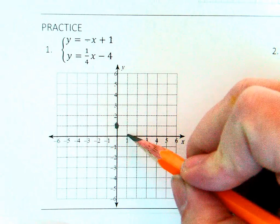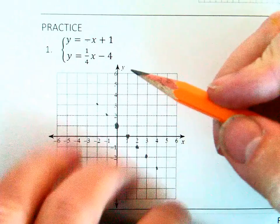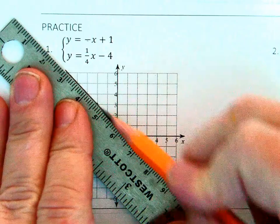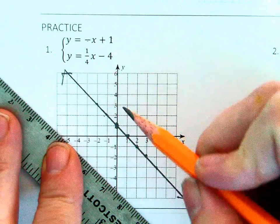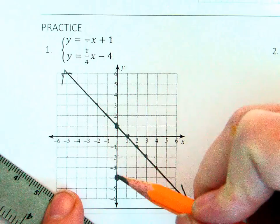In this example, both equations are already in slope-intercept form, so we can quickly graph the lines. The first has a y-intercept of 1 and a slope of negative 1 over 1. The second has a y-intercept of negative 4 and a positive slope of 1 over 4.